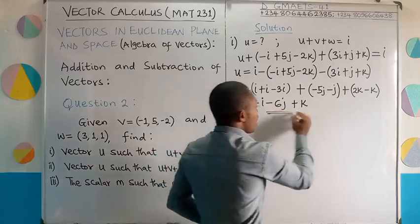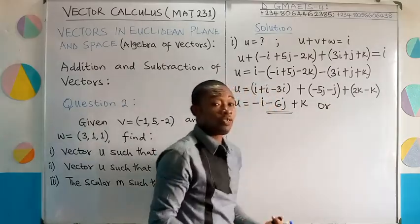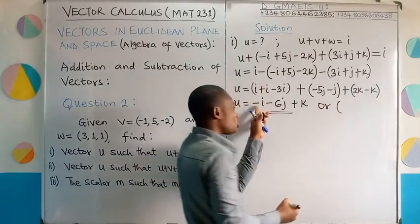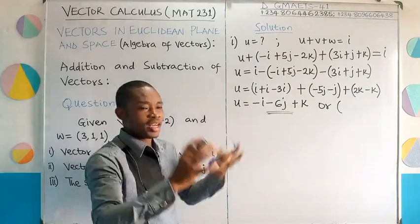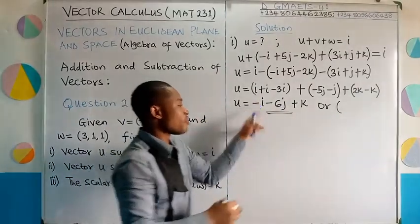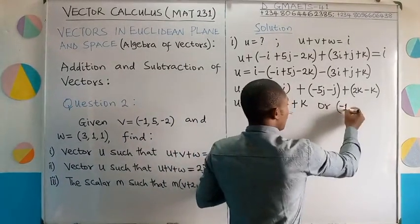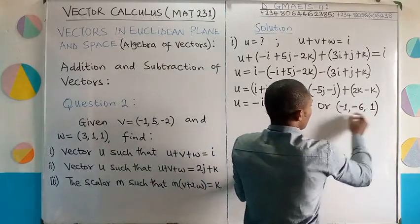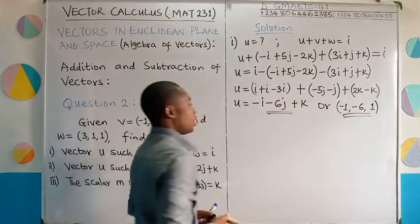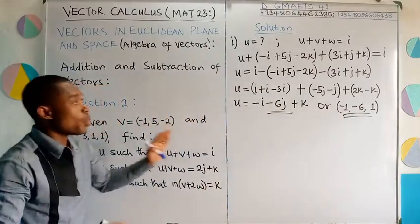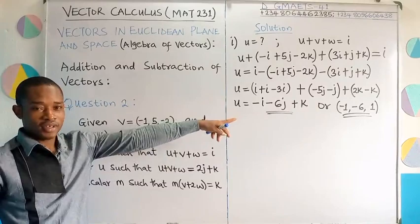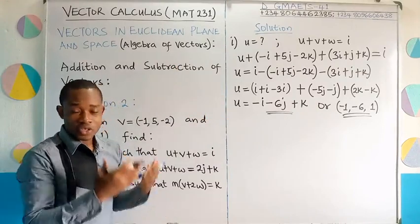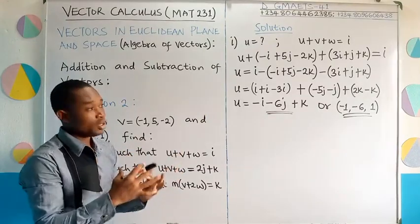And so this is our answer, or in terms of component forms. If you don't want to show the i, j, k, you just have to extract the coefficient of this i, j, k, and then enclose them in brackets. Here we have -1. Then this gives us -6. And for this k, we have +1. And of course, this is an alternative way you can write this answer. So the vector u we are asked to find. That's the value there. So you can see how I solved it. It's just simple arithmetic. Then considering the like terms using the i, j, k unit vectors.